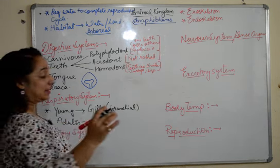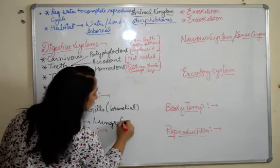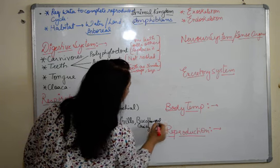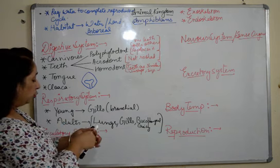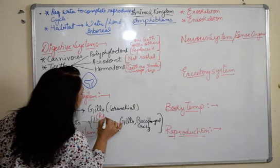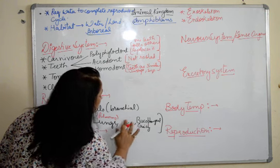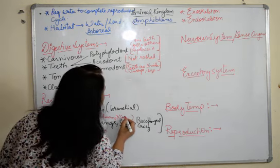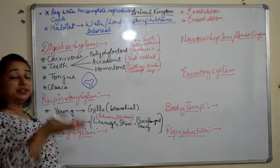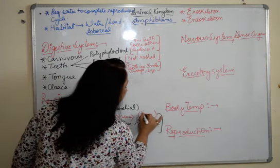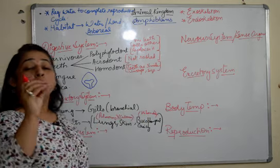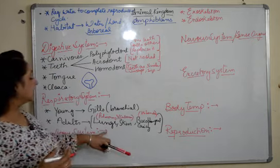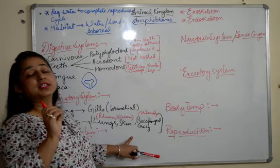When we talk about adults in amphibians, they show multiple types of respiration. They can breathe through lungs — that is pulmonary. They can breathe through skin — that is cutaneous. And they can breathe through the buccal pharyngeal cavity, which happens during hibernation — wherein they stop metabolic activities of their body but still have to survive, so they just breathe in through the buccal pharyngeal cavity.